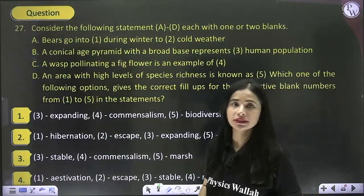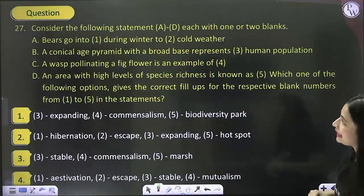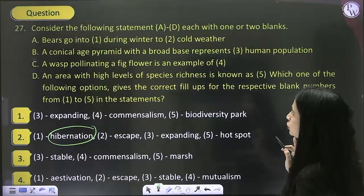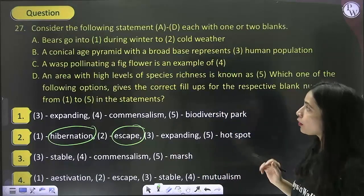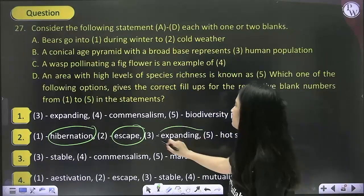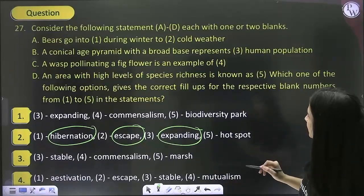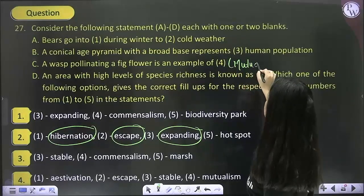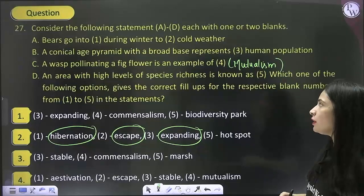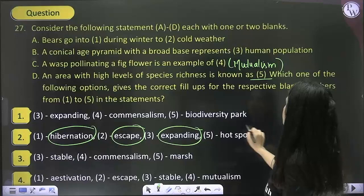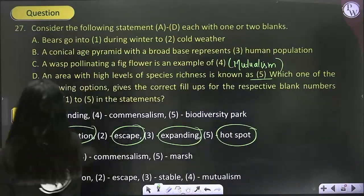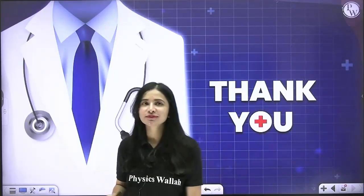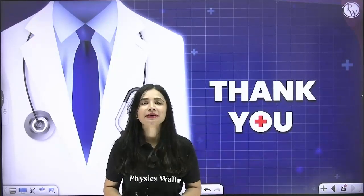Consider the following statements: bears going to sleep in winter is hibernation — statement 1 is hibernation. To escape cold weather — statement 2 is escape. A conical age pyramid with a broad base represents an expanding, growing population. A wasp pollinating a fig flower is an example of mutualism. An area with a high level of species richness is known as a hotspot, endemic to certain places. So the answer of this question becomes option 2. I hope you all have understood all the questions. Thank you for listening and watching. See you in the next lecture. Bye bye everyone, take care and keep studying.